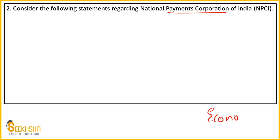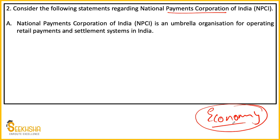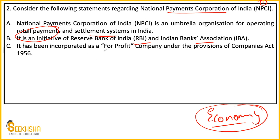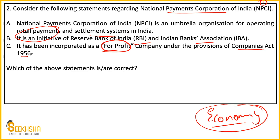Moving to the economy part — the Indian economy part is the most dynamic part and current-related questions are asked a lot. I have also made a playlist for static economics questions. Now, consider three statements about NPCI: Statement 1 — NPCI is an umbrella organization for operating retail payment and settlement system in India. Statement 2 — This is RBI and Indian Bank Association's initiative. Statement 3 — This is a for-profit organization registered under the Provisions of Companies Act 1956. Which statements are correct?